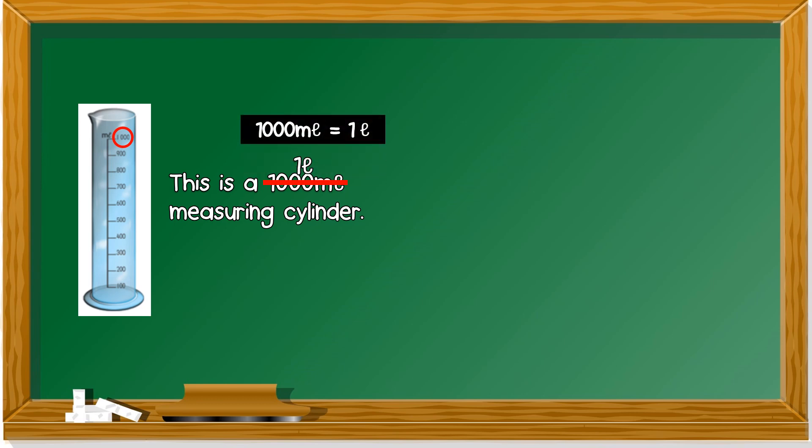This one is not a beaker but a measuring cylinder because it's taller and thinner. So you see the highest number there is 1,000 milliliter. So this is a 1,000 milliliter measuring cylinder. How about the graduation? The graduation is 100 milliliter.